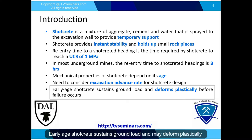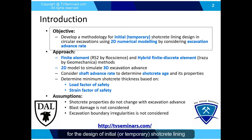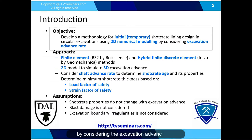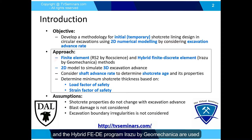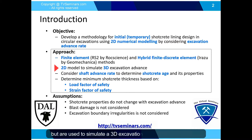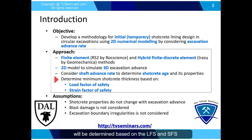Early age shotcrete sustains ground load and may deform plastically if loaded beyond its capacity before failure occurs. In this research, we developed a methodology for the design of initial shotcrete lining using 2D continuum and discontinuum numerical methods, considering the excavation advance rate. The finite element program RS2 by Rocscience and the hybrid finite-discrete element program IRAZU by Geomechanica are used. Both RS2 and IRAZU are two-dimensional programs used to simulate 3D excavation advance. The shaft advance rate is considered to determine corresponding shotcrete properties, and the minimum shotcrete thickness is determined based on load and strain factors of safety.